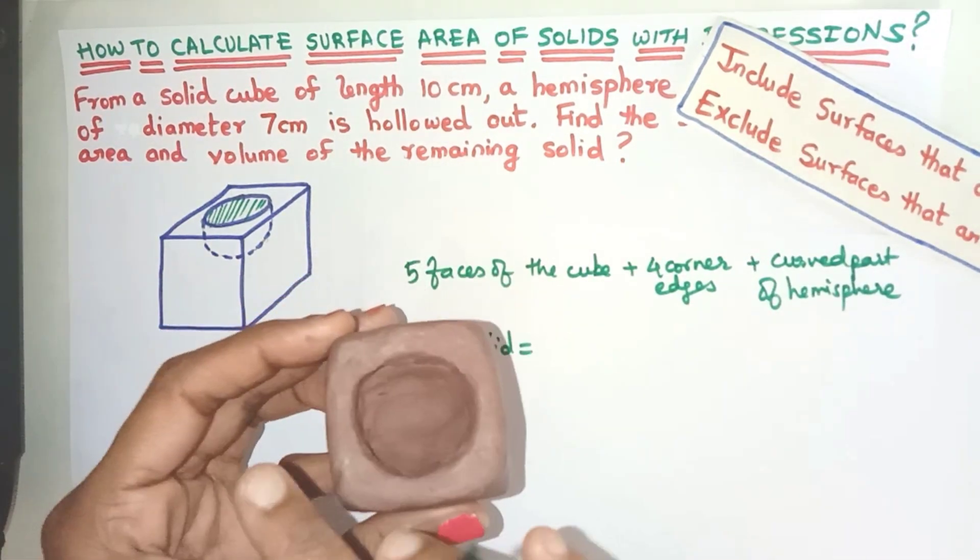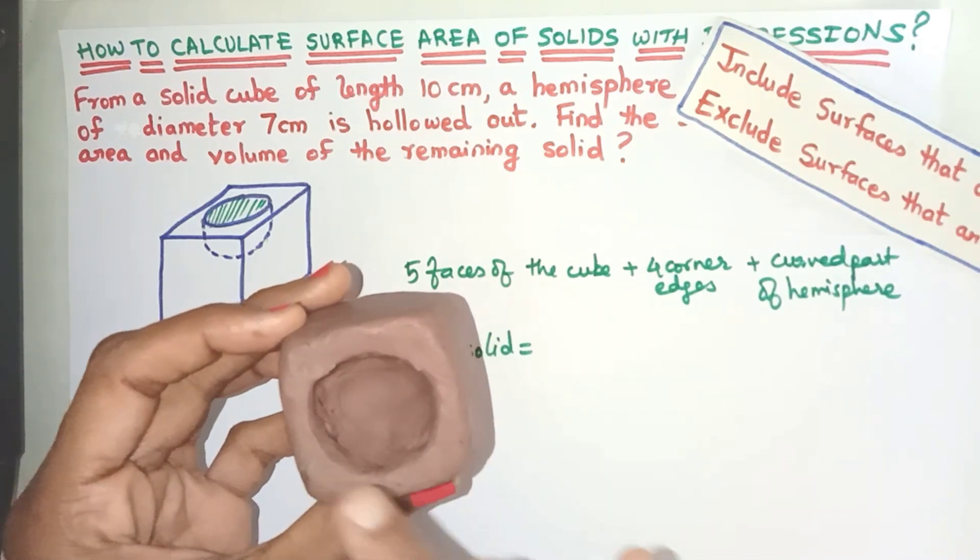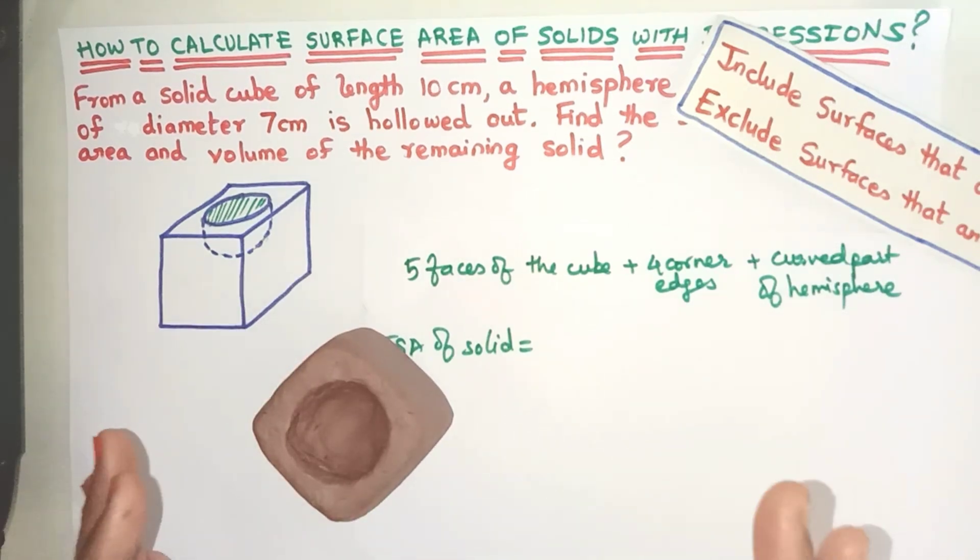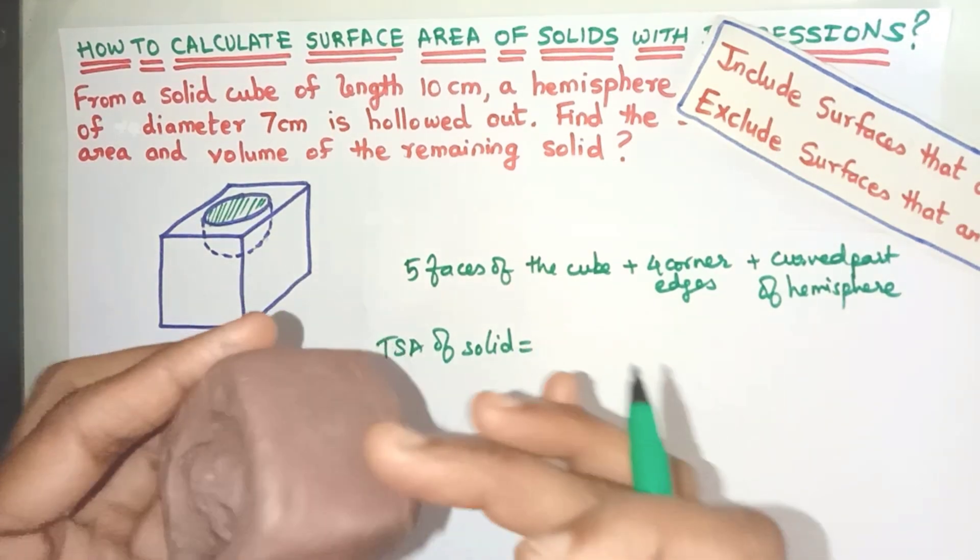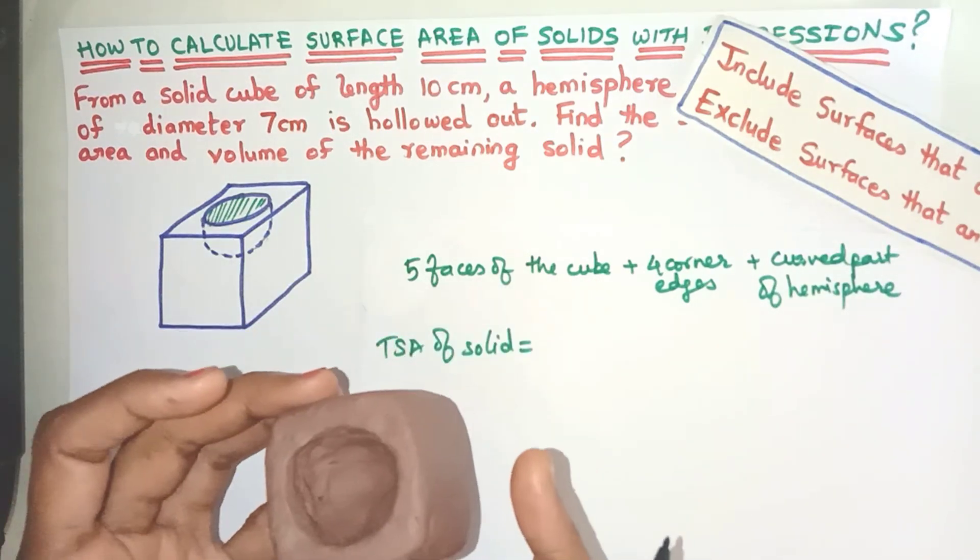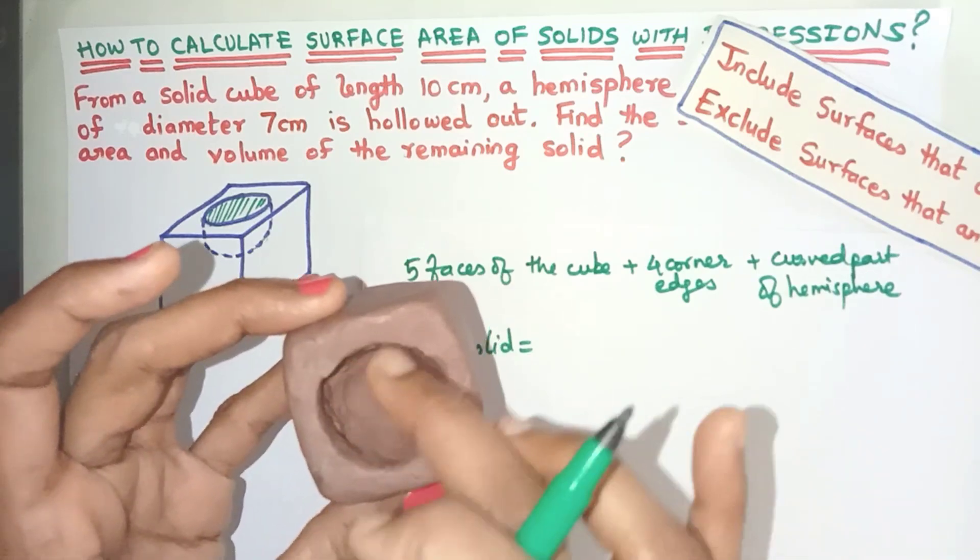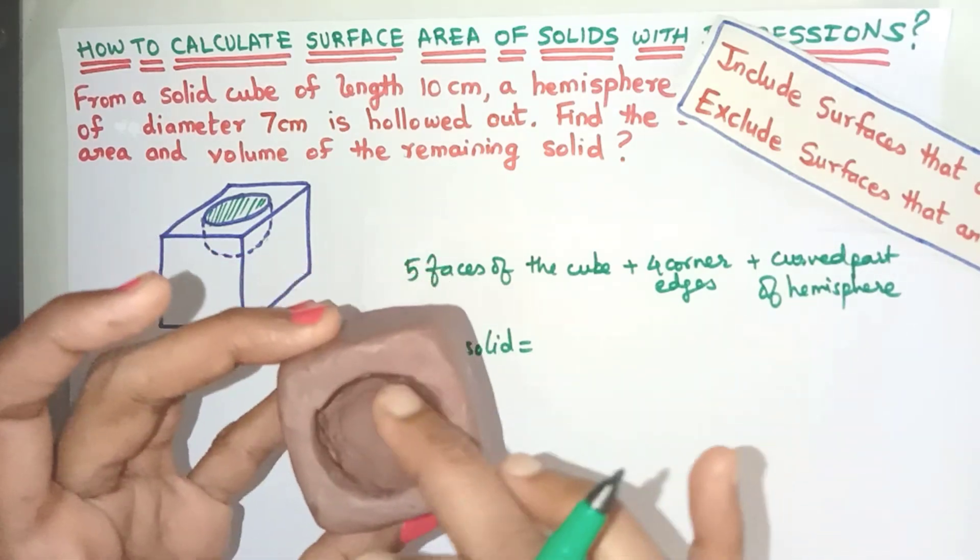The five faces of the cube we know what is the formula, but to get these four corner areas there is no direct formula. So what we'll do friends is first we'll find the total surface area of the cube - that is the area of all the six surfaces - and then we'll simply subtract the area of this circle which is not at all visible to us.